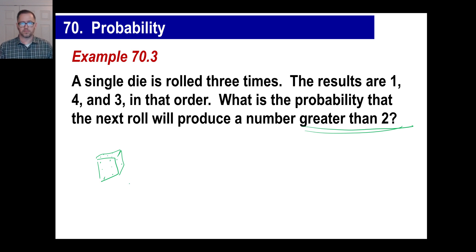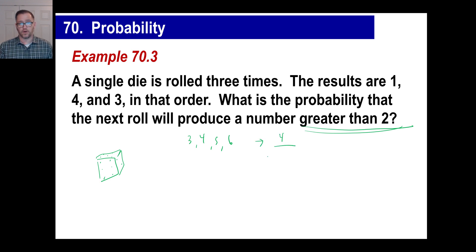What's the probability the next roll will produce a number greater than two? Numbers greater than two on the die are three, four, five, and six — that's four chances. The total possibilities are six. So the probability is four out of six, which reduces to two out of three.